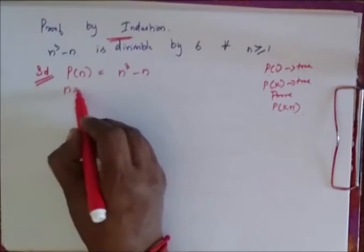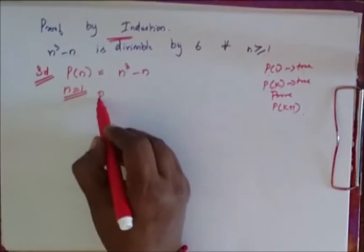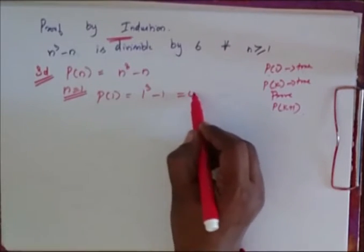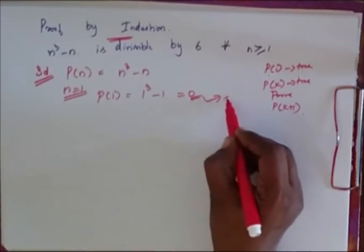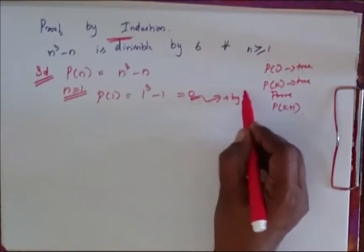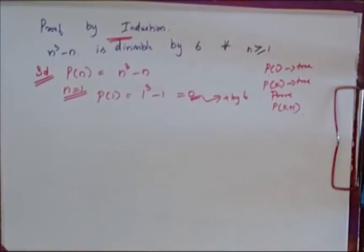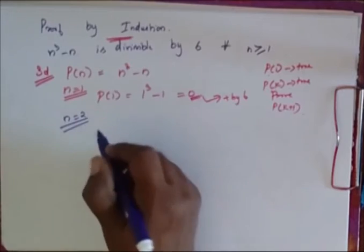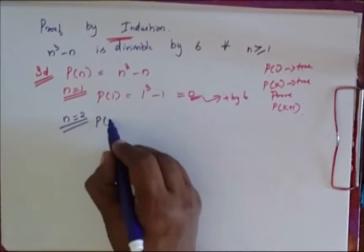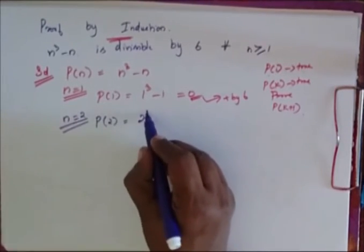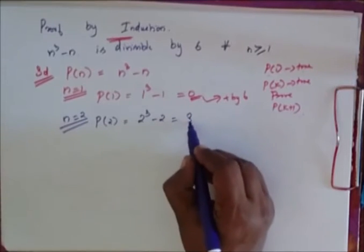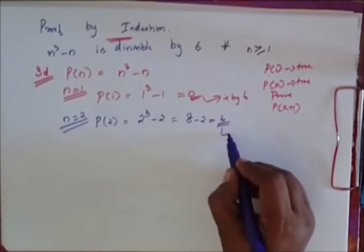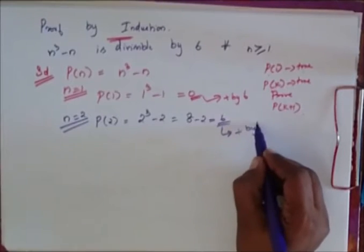So when my N is equal to 1, my P of 1 is equal to 1 cubed minus 1, which is equal to 0. I say that it is divisible by 6. We also consider for N is equal to 2 and check whether it is divisible by 6. My P of 2 is equal to 2 cubed minus 2, which is equal to 8 minus 2, which is equal to 6. So this is divisible by 6.